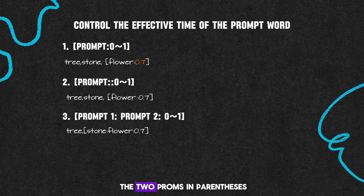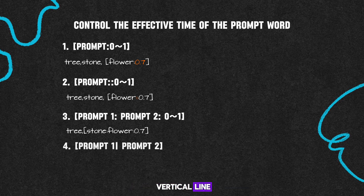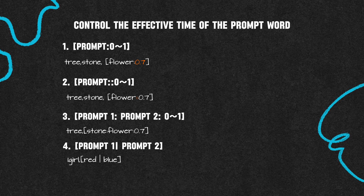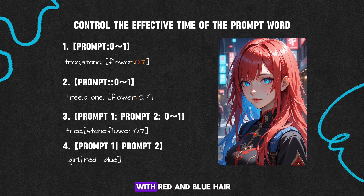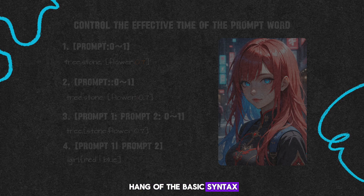If the two prompts in brackets are separated by a vertical line, it's alternate sampling. So red hair and blue hair prompts alternate, and you'll end up with red and blue hair.